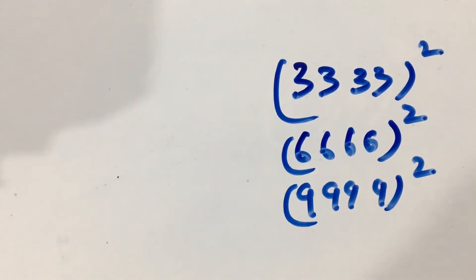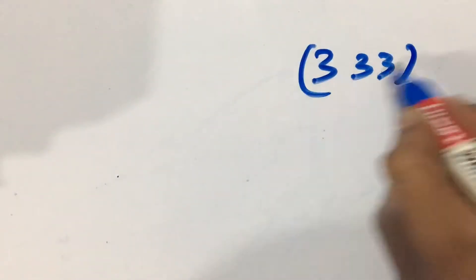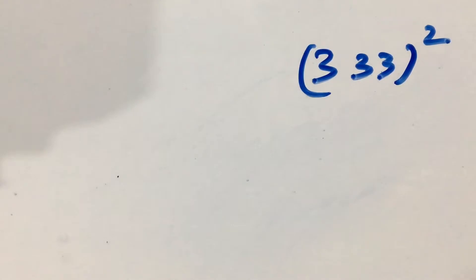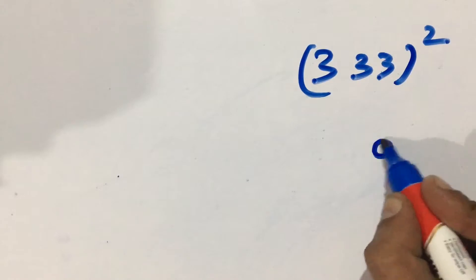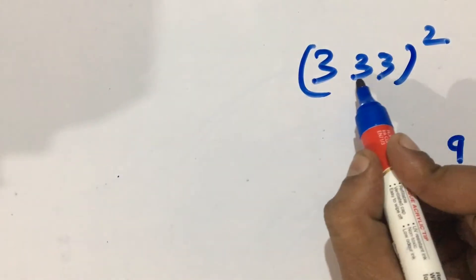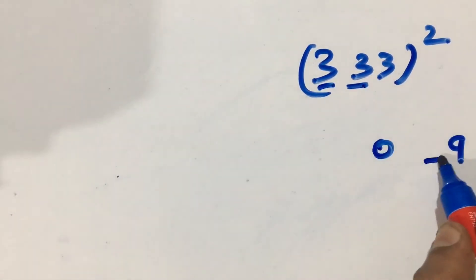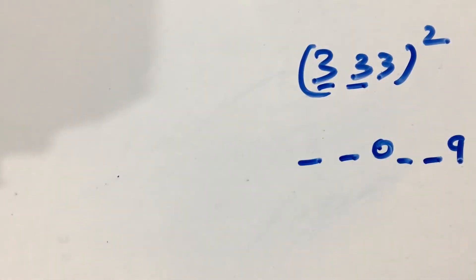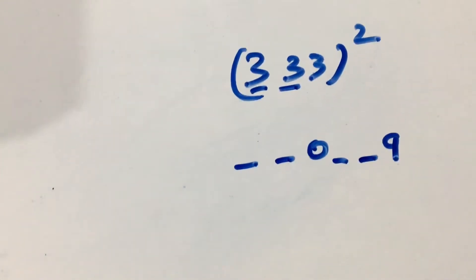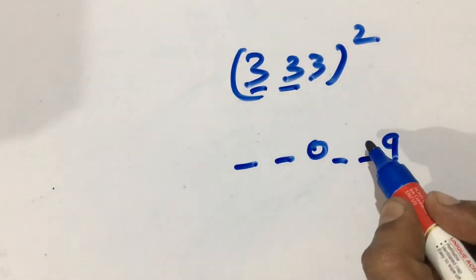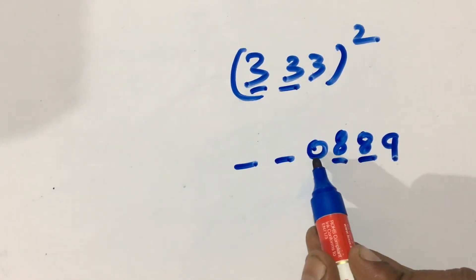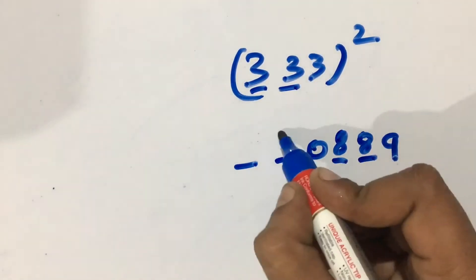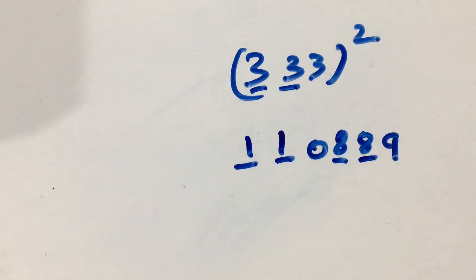Let us take 333 squared. First, we know 3 squared is 9, so I write it as 09. We have used this 3, so the remaining digits are 1 and 2 — that's one, two, one, two. Now take this 9, minus one is 8. In the zero, add one to get 1. So the answer is 1 1 0 8 8 9.